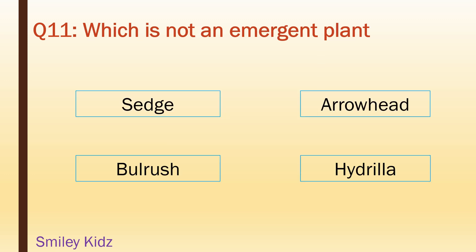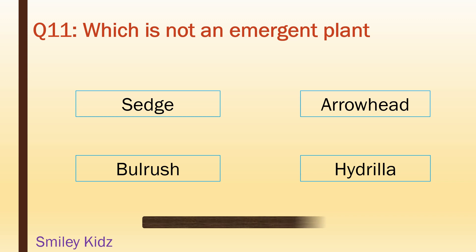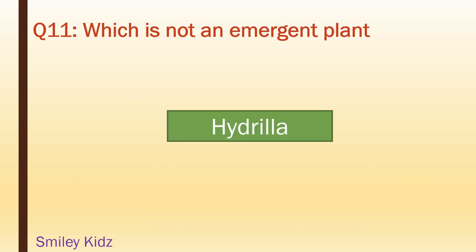Which is not an emergent plant? Sedge, arrowhead, bulrush, hydrilla. Your time starts now. Your time is up. And the right answer is hydrilla.